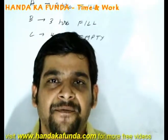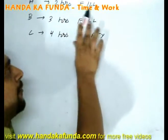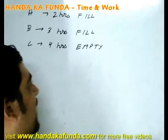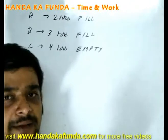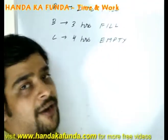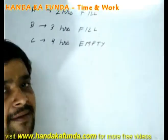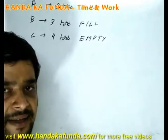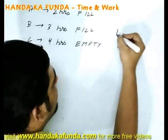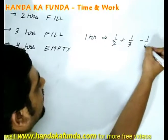To understand the concept of negative work, we need to understand what our target is. For example, suppose there is a tank: A takes 2 hours to fill the tank, B takes 3 hours to fill the tank, and C takes 4 hours to empty the tank. Which of the pipes A, B, and C is doing positive work and which is doing negative work? We need to know our target — whether it is to fill or empty the tank. If our target is to fill the tank, then A and B are doing positive work and C is doing negative work. In one hour, A will fill 1/2, B will fill 1/3, and C will empty 1/4.